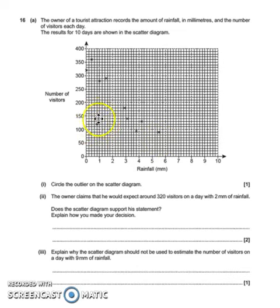But as you can see, there's one here that is not quite fitting, so part one says circle the outlier on the scatter diagram. An outlier is something that doesn't really fit in with the rest of the data, so that is clearly this extra coordinate here. That's our outlier.